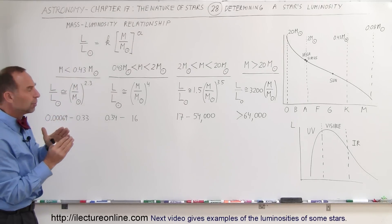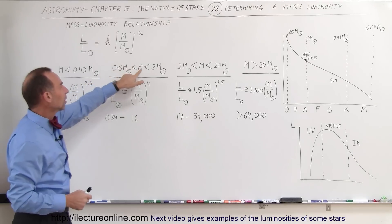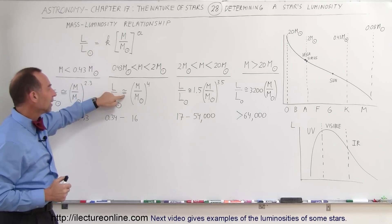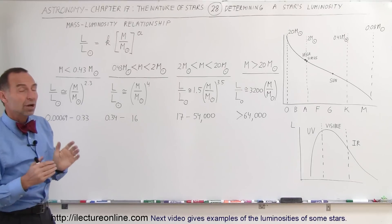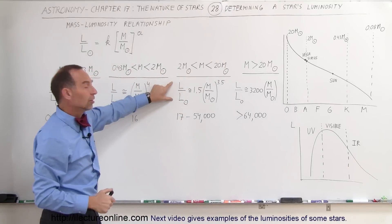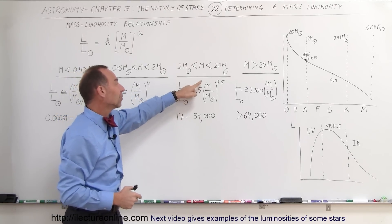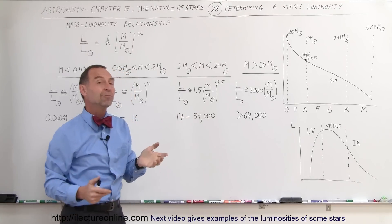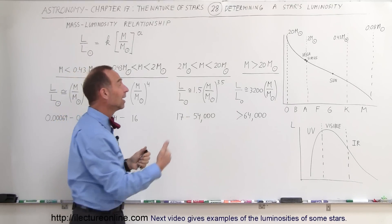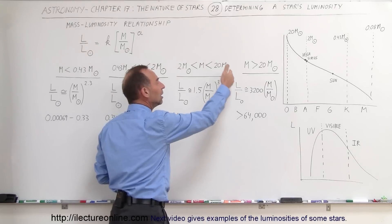The mass-luminosity relationship changes slope across different ranges. For stars between 0.43 and 2 solar masses — fairly similar to the sun — the relationship becomes L/L_sun ≈ (M/M_sun)^4. For bigger stars in the range from 2 to 20 solar masses, such as Vega and Sirius, the relationship changes to L/L_sun ≈ 1.5 × (M/M_sun)^3.5. Finally, for stars greater than 20 solar masses — a very rare type — it's simply 3,200 times the ratio of the star's mass to the sun's mass, giving you the luminosity relationship.